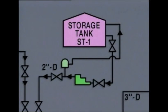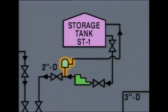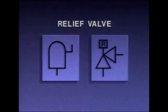The final valve symbol on this diagram represents a relief valve. The relief valve opens when system pressure exceeds a preset limit to vent fluid from the system. If the pressure continues to rise, the valve opens further. Once pressure returns to normal, the valve closes automatically. This is a typical symbol used to represent a relief valve, and you may also see it represented another way.